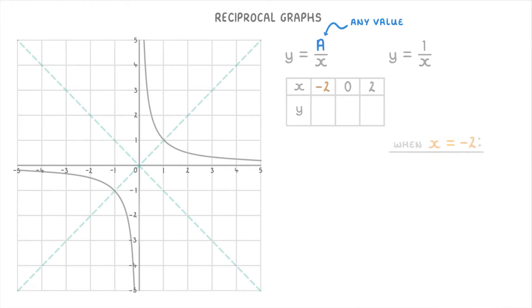For example, to find out what y is when x is minus 2, we just plug minus 2 into our y equals 1 over x equation. So it becomes y equals 1 over minus 2, or just y equals minus 1 half. So we know that when x equals minus 2 on our graph, y should equal minus 1 half, which it does right here.